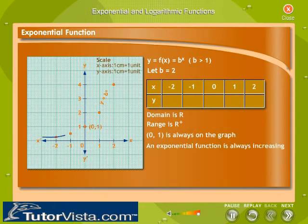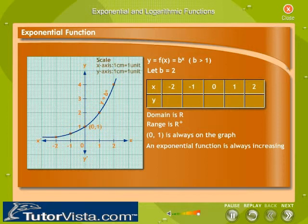An exponential function is always increasing. When x is a very large negative number, y is a very small positive number. The negative x-axis is a horizontal asymptote of the curve.